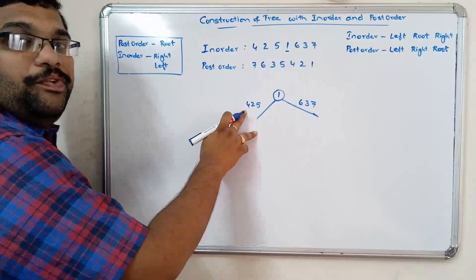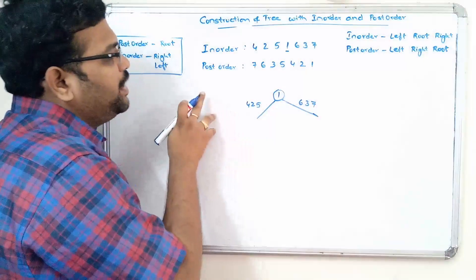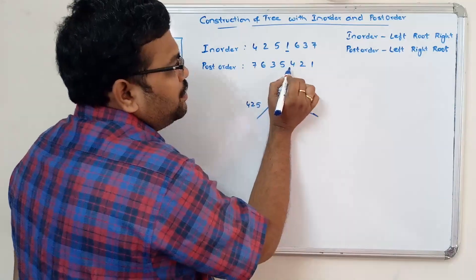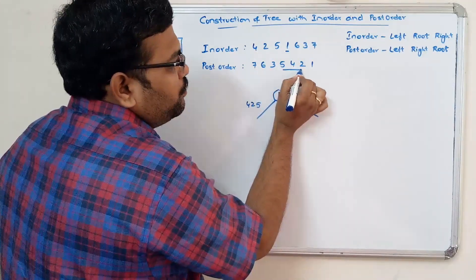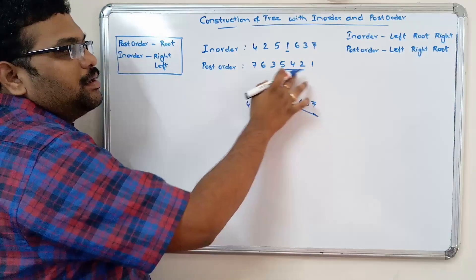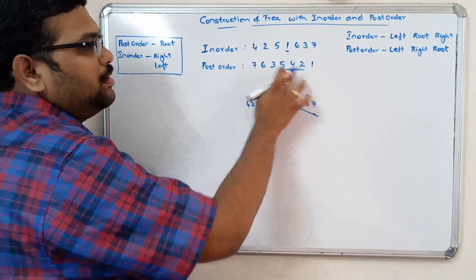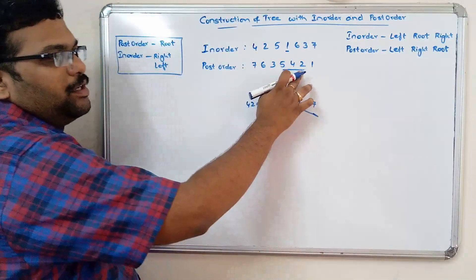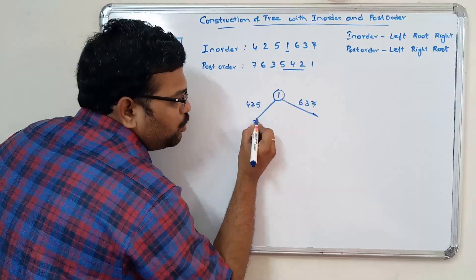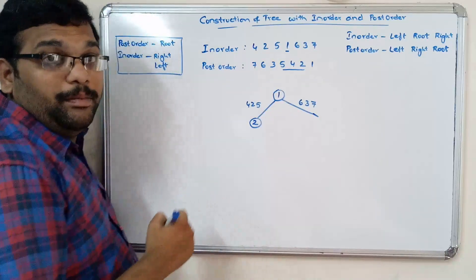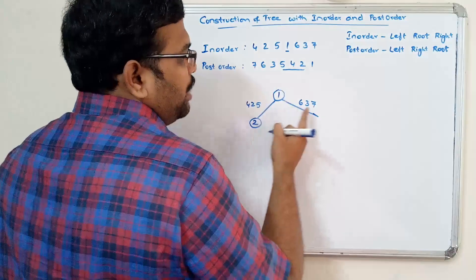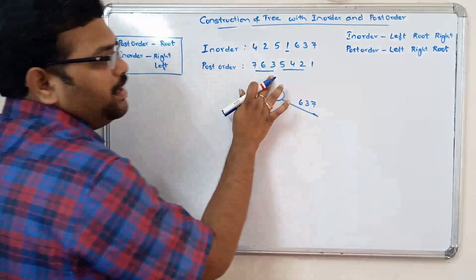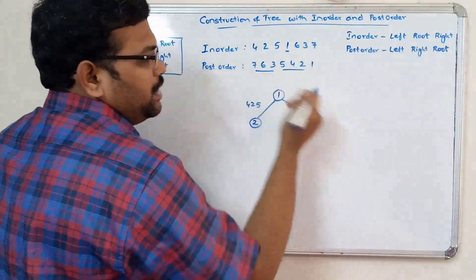Among 4, 2, 5 we have to find the root node using the postorder. In that portion of the postorder — 5, 4, 2 — the last element is 2, so 2 is the root element. Coming to 6, 3, 7, the last element in postorder is 3, so 3 is the root of the right subtree.